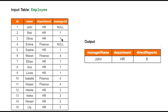John is the manager of six employees, so this employee satisfies the condition of having at least five direct reports in the same department — since all of them belong to the HR department. Our output contains only this employee name, John, having six direct reports, which is the number of direct reports, and the department name.